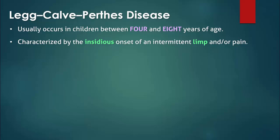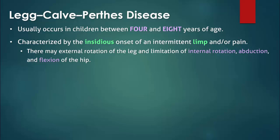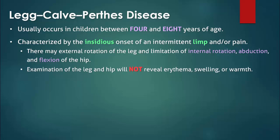The child may hold their leg in external rotation and have decreased range of movement at the hip joint. Physical examination may also reveal an antalgic gait or a Trendelenburg gait, leg length discrepancy, and muscular atrophy in the thighs and buttocks. However, examination of the leg and hip will not reveal erythema, swelling, or warmth.